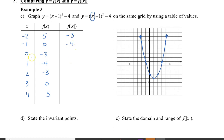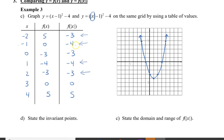Continuing with the rest of the points: for x equals 0, I get negative 3; x equals 1, negative 4; x equals 3, 0; and x equals 4, 5. Notice that for negative 2 and positive 2, I get the same f of x value: both negative 3. For negative 1 and positive 1, I also get the same value: negative 4.